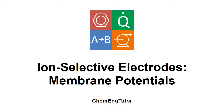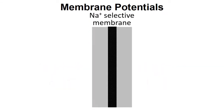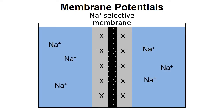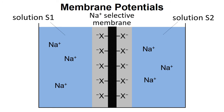In this video we're going to examine the origin of membrane potentials. We're going to do this by considering a sodium selective membrane, which has a number of fixed anion sites designed to interact selectively and reversibly with sodium ions. We're also going to consider two solutions of sodium ions separated by the membrane — solution S1 and solution S2.